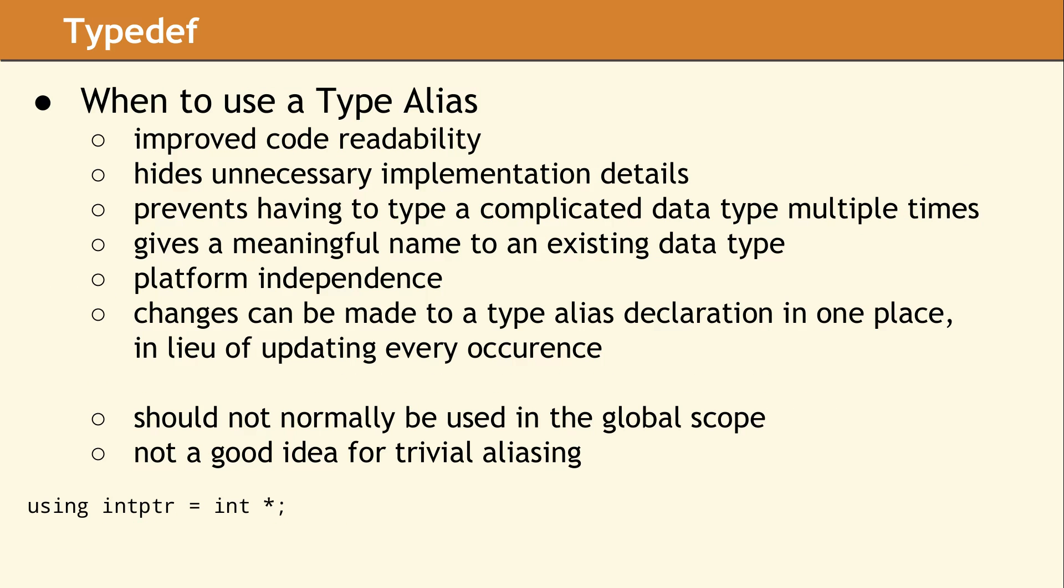A type alias has several useful qualities. The most obvious is that it can improve readability of your code, and it prevents you from needing to type a long or complicated data type in multiple locations. Another useful reason is for platform independence.